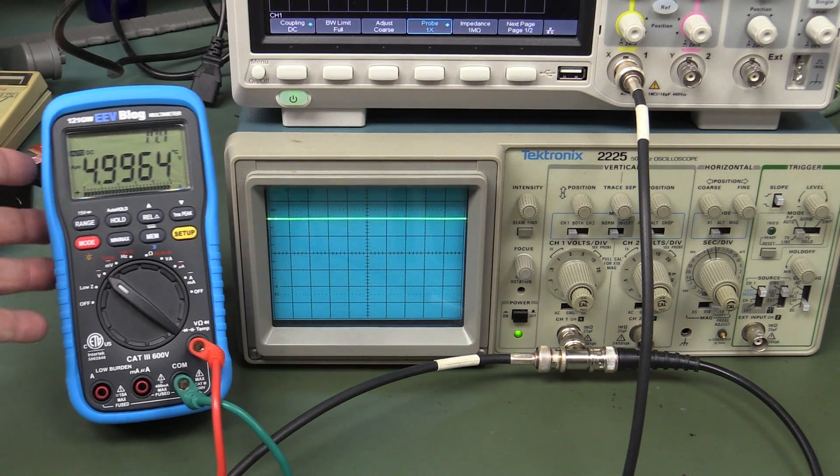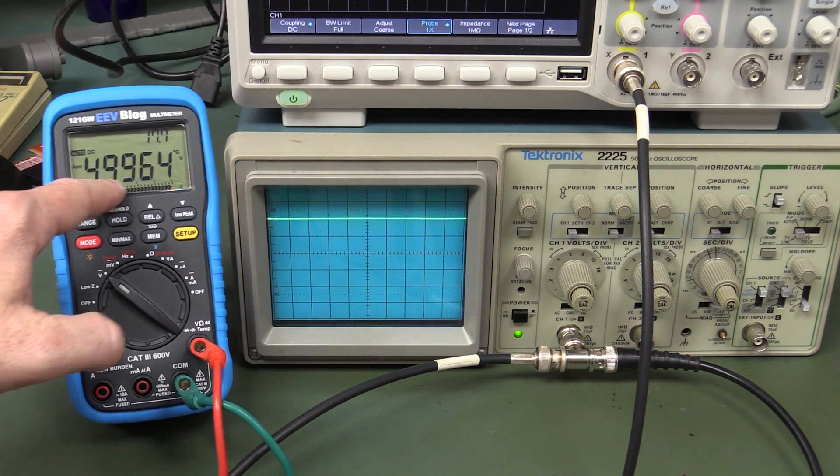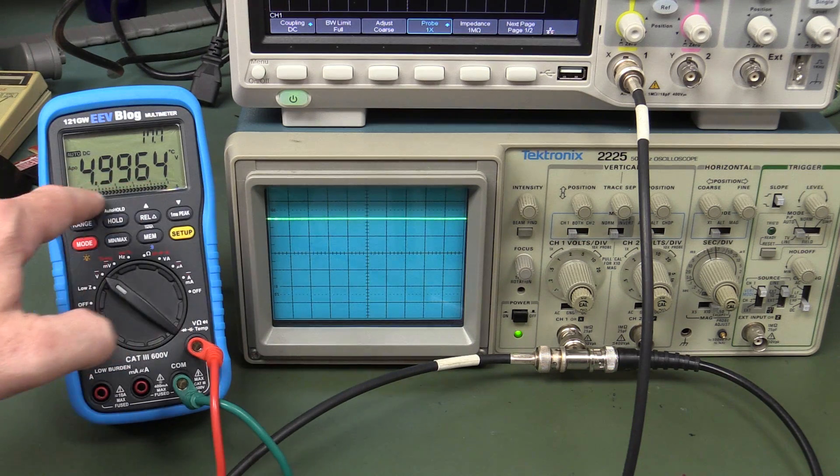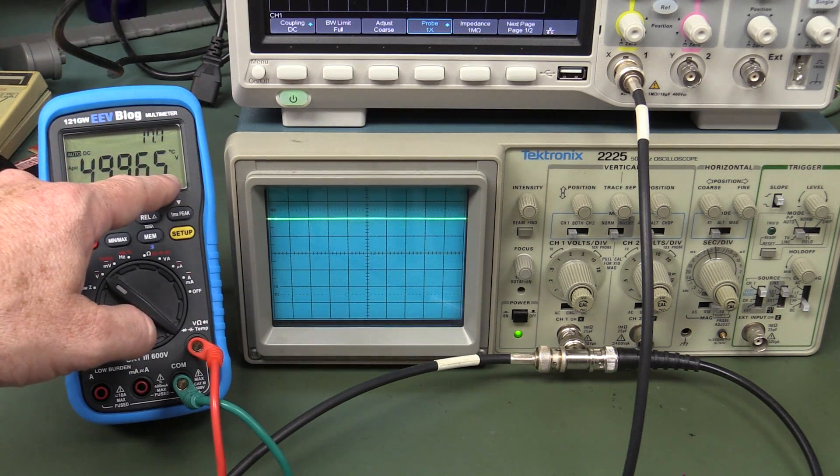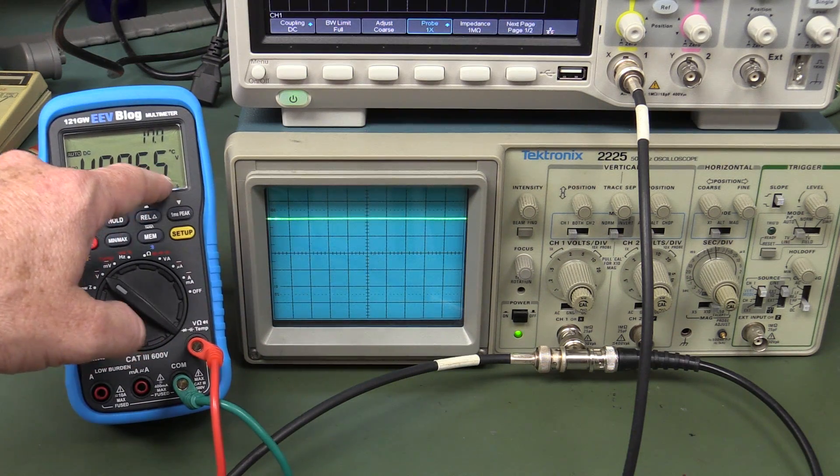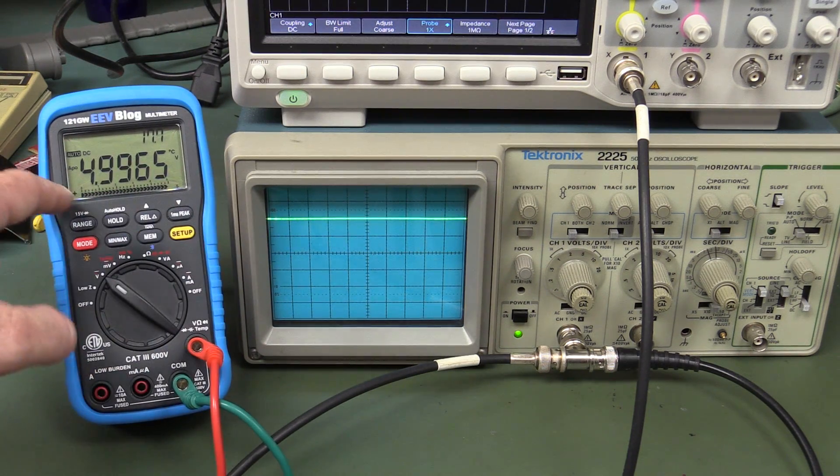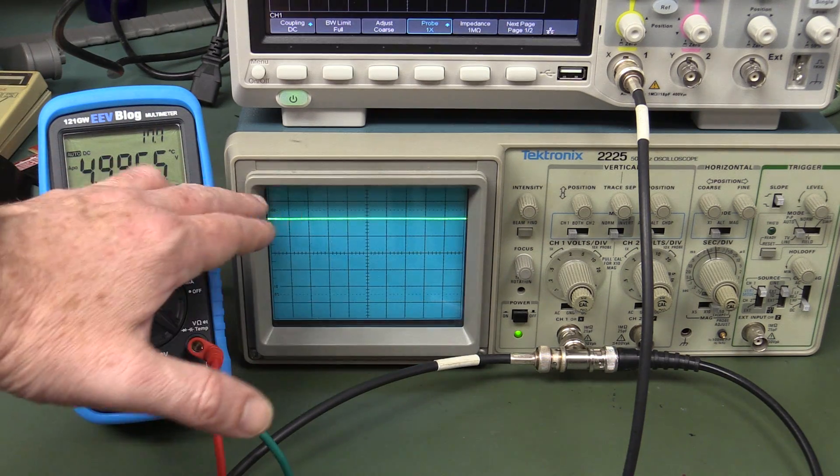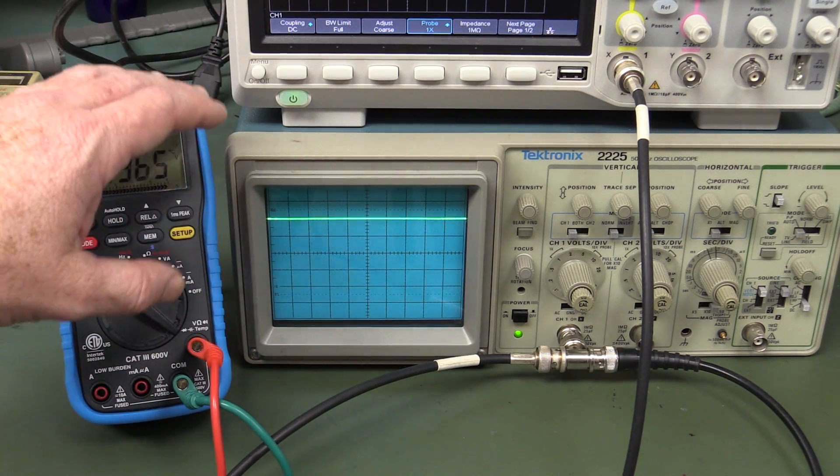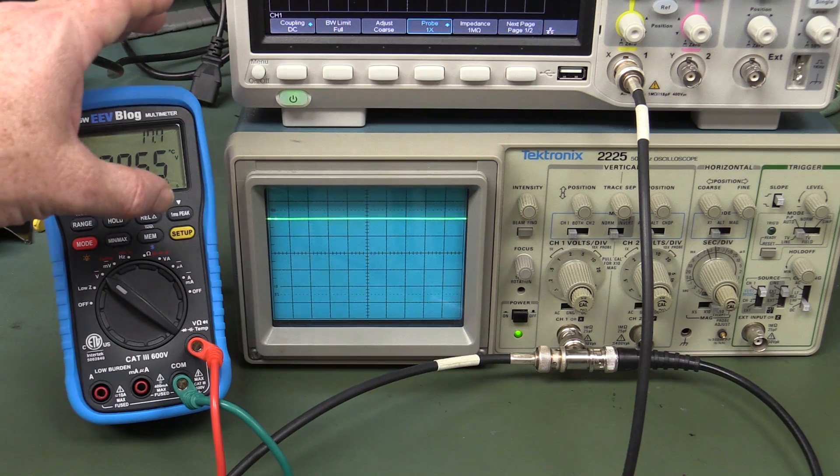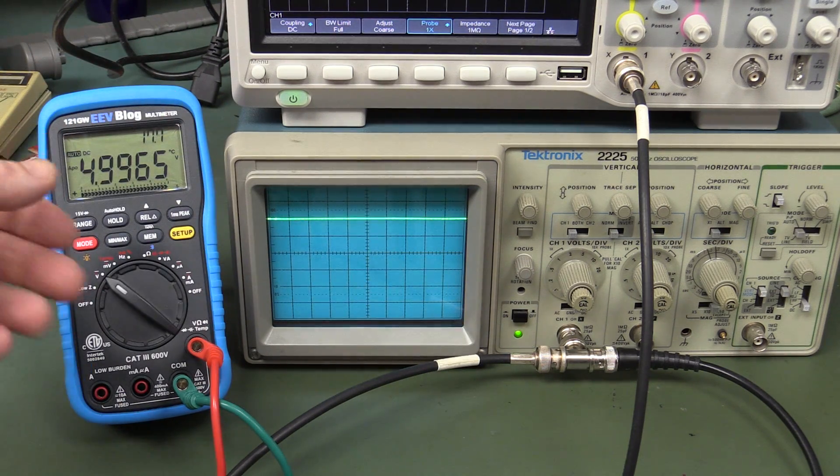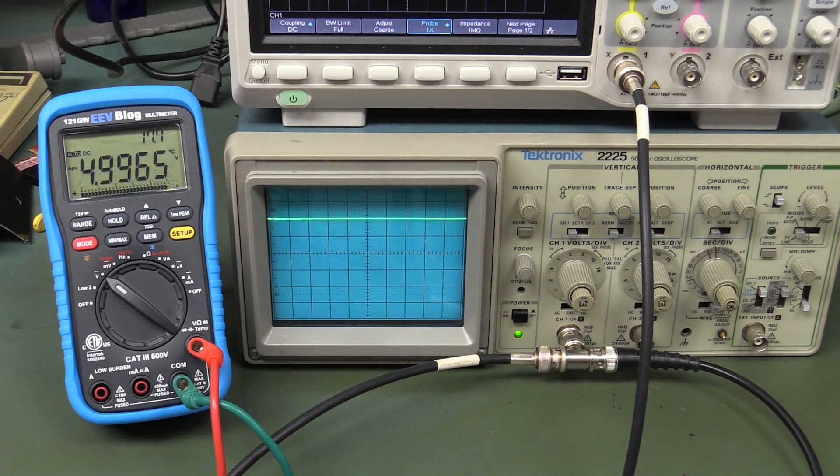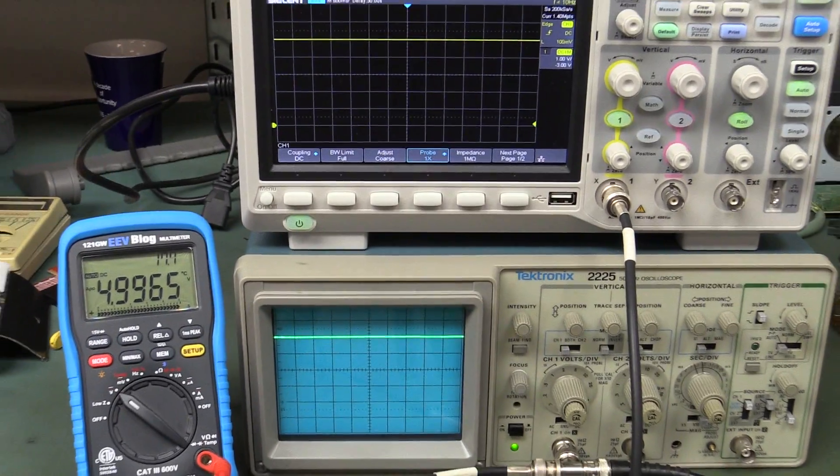So it's displaying exactly the same thing. Not with the same precision, not with the same resolution as you can get on a multimeter here. This is a 50,000 count multimeter. So basically, it's got four decimal place resolution here. That's very good. You can't get the same resolution on an oscilloscope. But that's not the purpose of an oscilloscope like this. It's designed to view waveforms with respect to time.